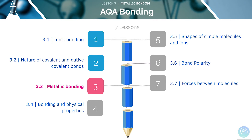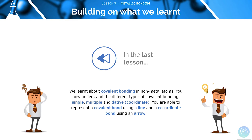This is the third in our series of seven videos on the topic of bonding. In the last lesson, we learnt about covalent bonding in non-metal atoms. We now know about the different types of covalent bonding, and how to represent these bonds using arrows and lines.